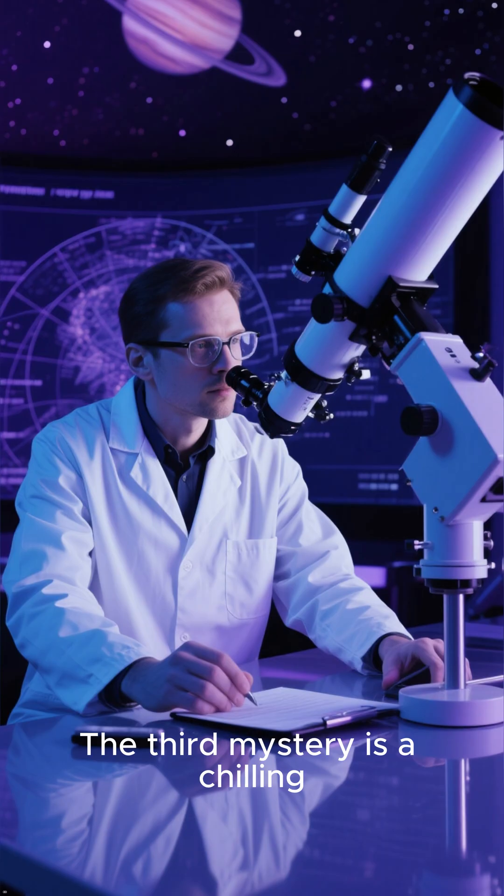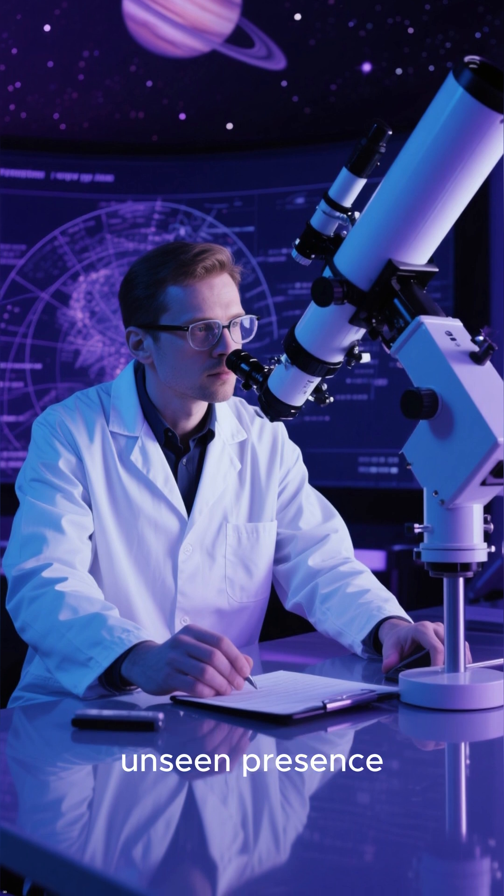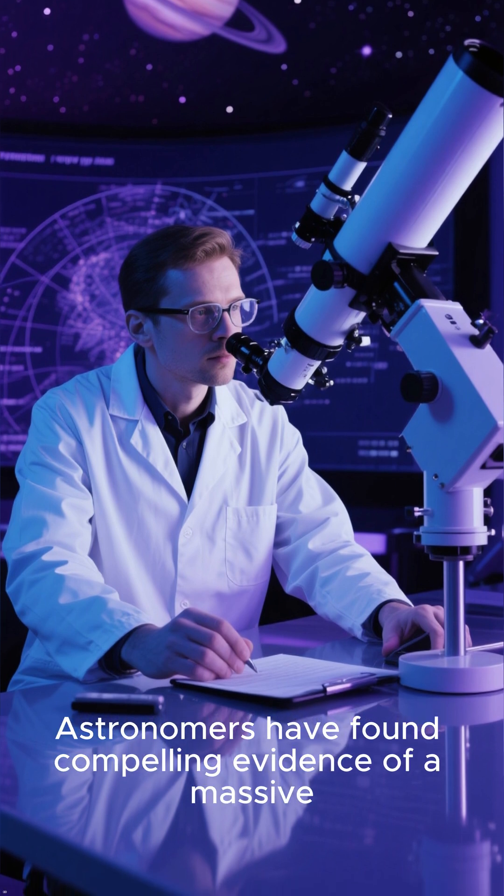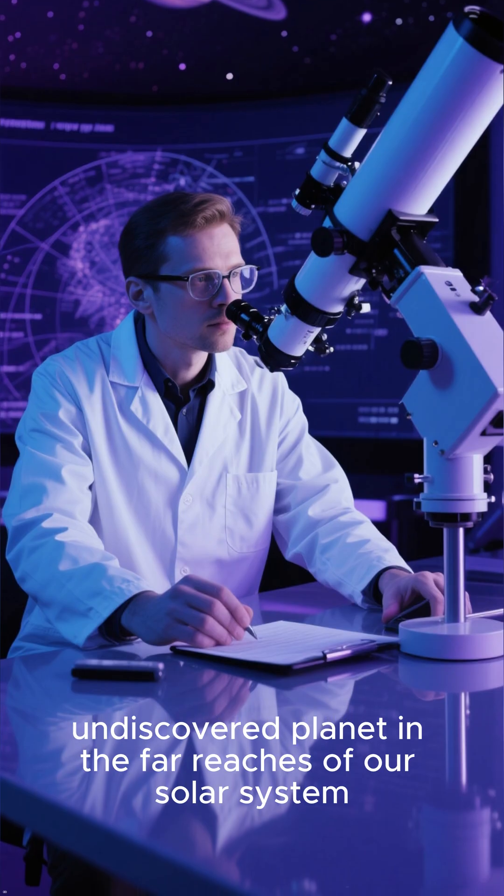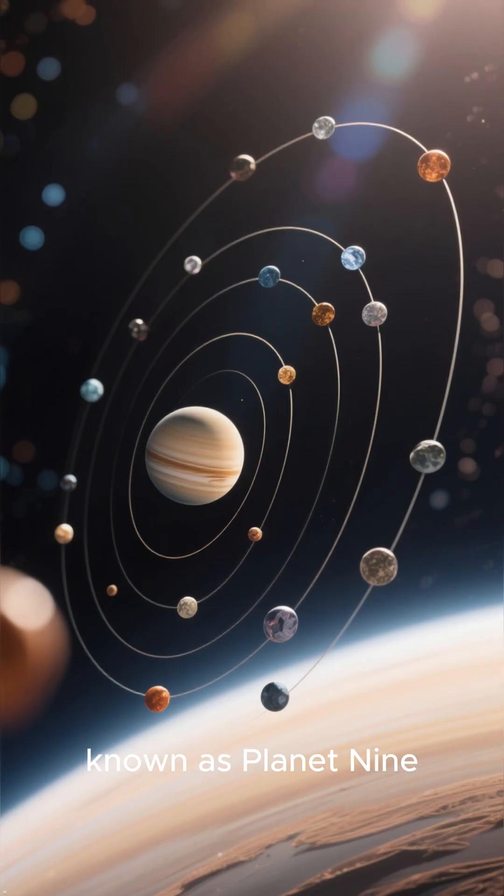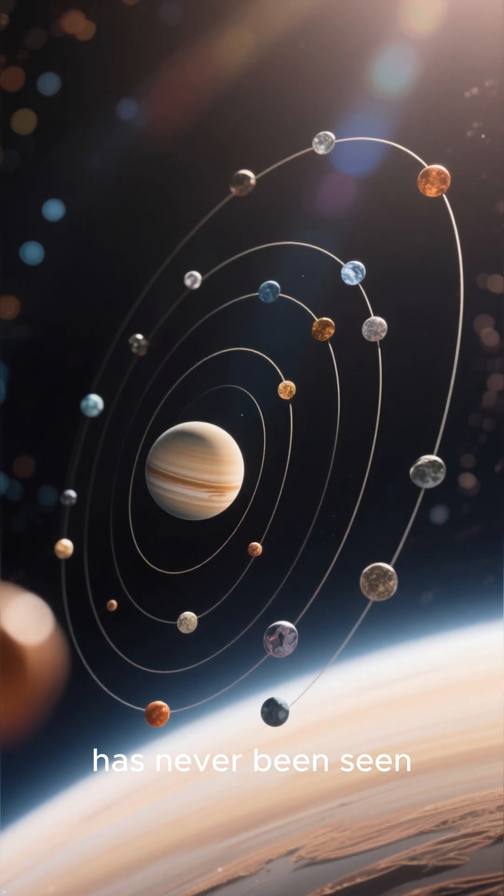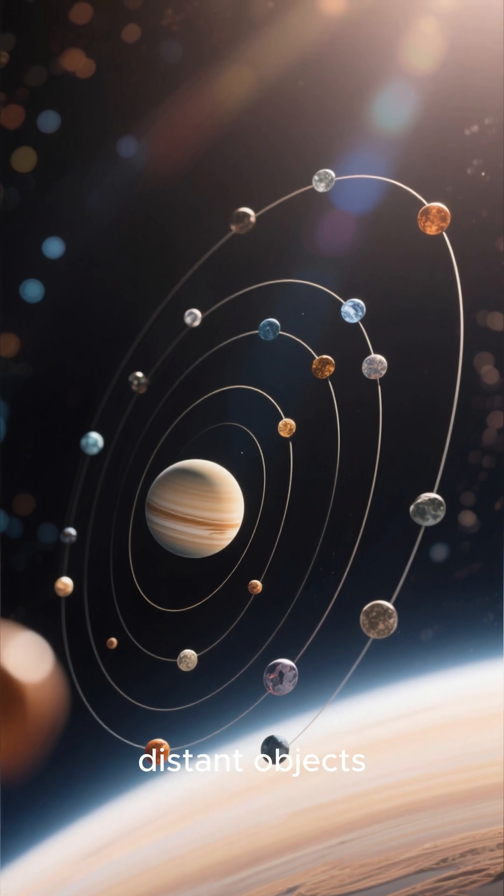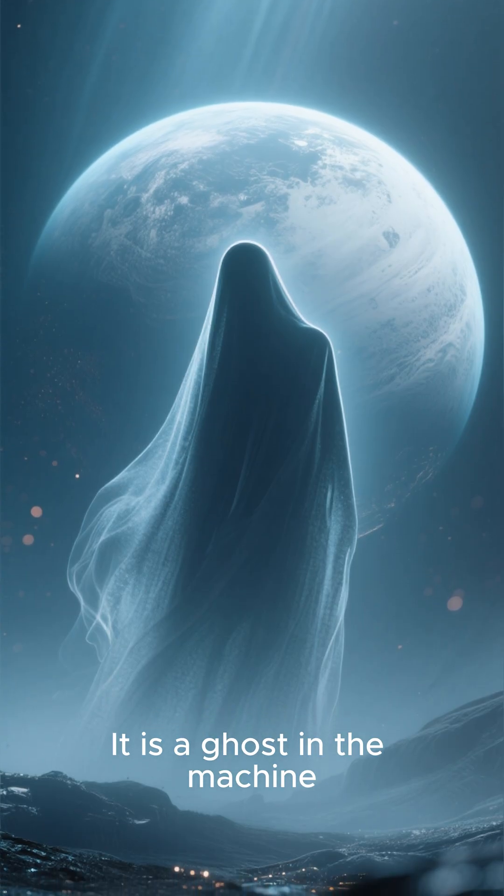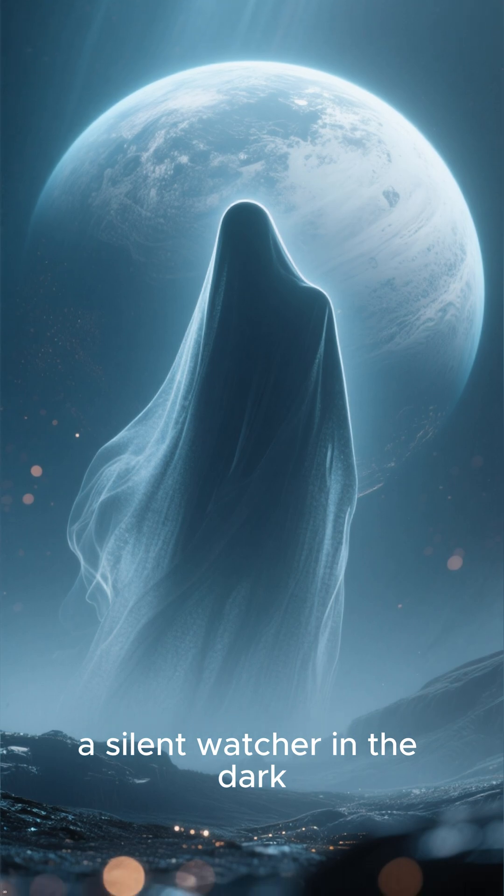Number 3: The Unseen Planet. The third mystery is a chilling, unseen presence. Astronomers have found compelling evidence of a massive, undiscovered planet in the far reaches of our solar system. This hypothetical world, known as Planet 9, has never been seen. But its immense gravitational pull is believed to be subtly warping the orbits of smaller, distant objects. It is a ghost in the machine, a silent watcher in the dark.